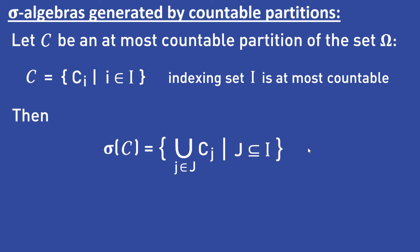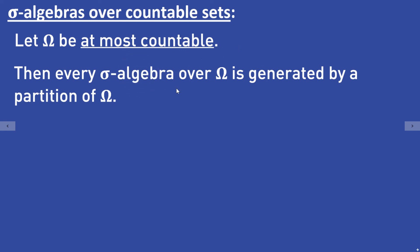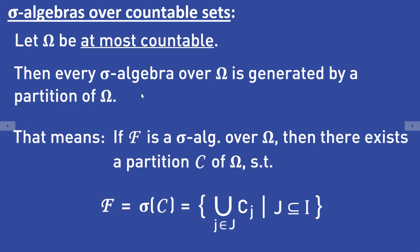Now let's consider finite or countable sample spaces. Let omega be at most countable. Then every sigma algebra over omega is generated by a partition of omega. That means if F is a sigma algebra over an at most countable set omega, then there exists a partition C such that F equals σ(C), which equals the collection of all countable unions of elements from C. In other words, you can write down every sigma algebra over an at most countable set by finding all partitions of that set.